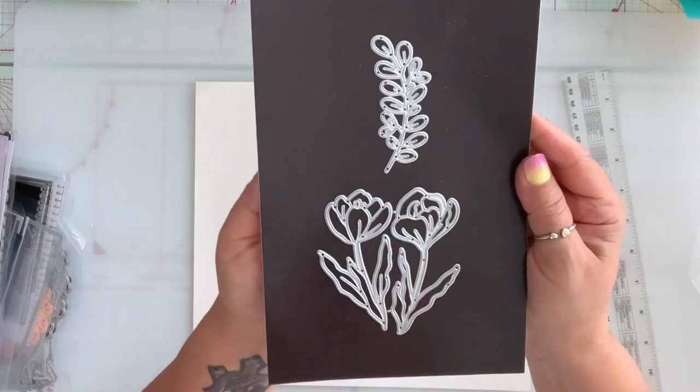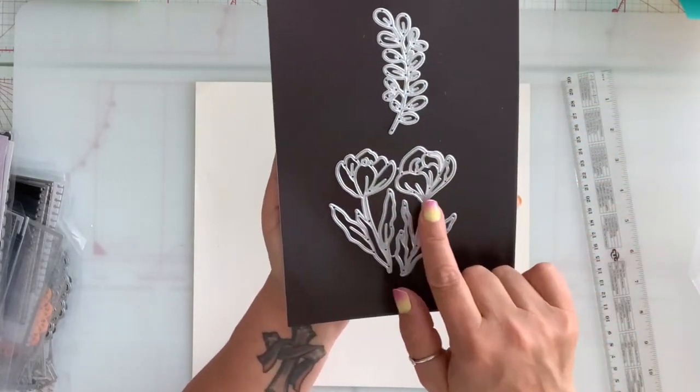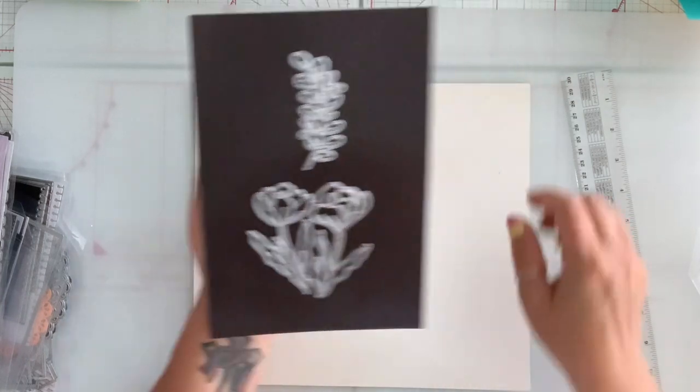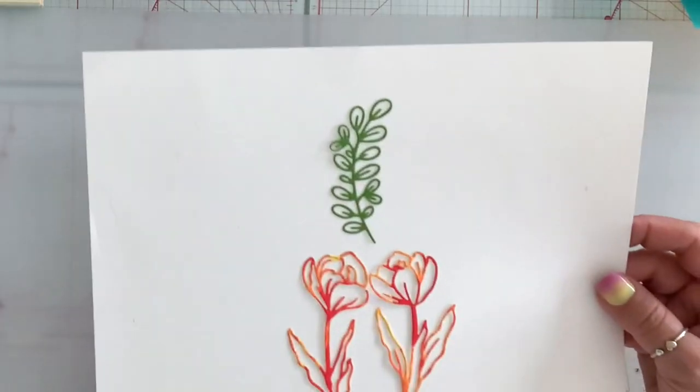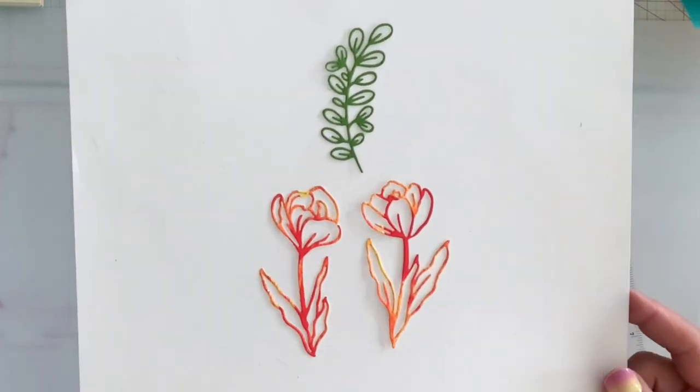Next, I got these dies. The leaf is separate die and these flowers are separate die. This is how the leaf die cuts. And that's the flower die.